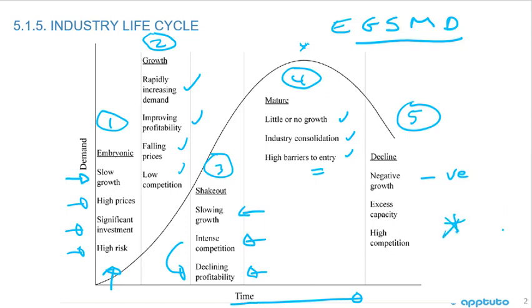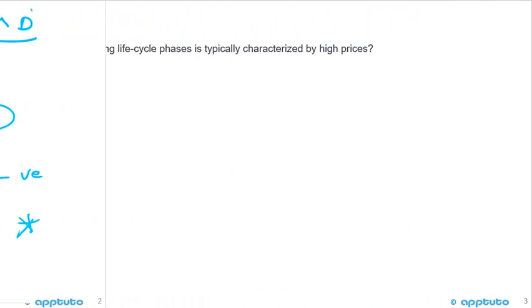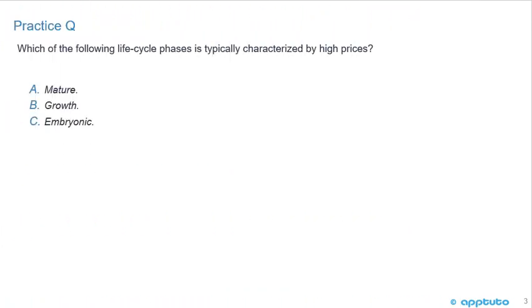So that's the industry lifecycle. Step number one: memorize the phases — embryonic, growth, shakeout, mature, decline. Step number two: understand the characteristics for each stage. We'll do a series of practice questions so you can see that the exam tests exactly this type of memorization.